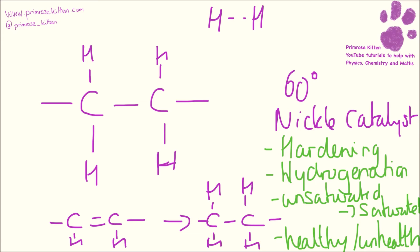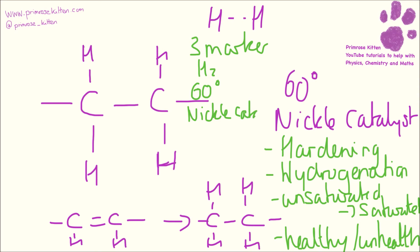Hardening itself isn't actually tricky because it's going to be a three-marker, and your three marks are for hydrogen gas, 60 degrees, and a nickel catalyst. But the hard part comes from working out what the examiners are looking for. The most common ways they ask this question are as hardening, hydrogenation, something to do with saturation, or something to do with how healthy it is.